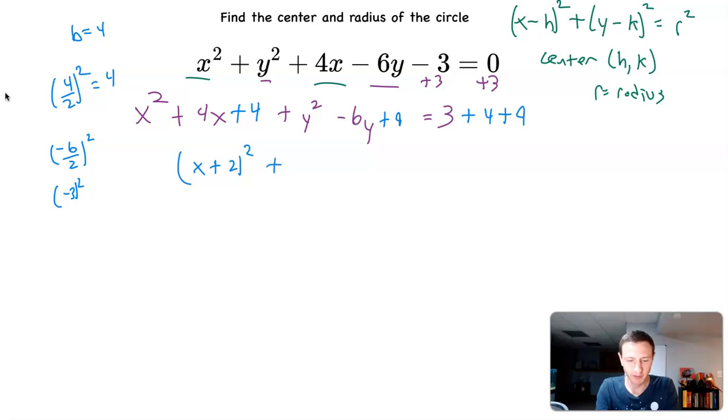Plus, then over here, y squared minus 6y plus 9. That's going to be y minus 3 squared.